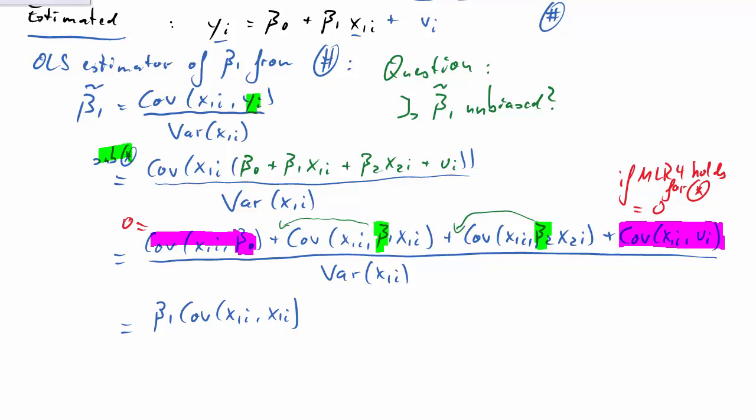So we are left with beta 1 times covariance of x1 and x1, which is just the variance of x1. Divide it by the variance of x1 and this cancels out. So we are left with beta 1 plus the second term: beta 2 times the covariance of x1 and x2 divided by the variance of x1. Let's look at this part: covariance x1, x2 divided by variance of x1. This should look familiar.